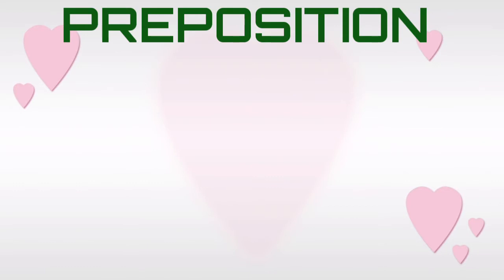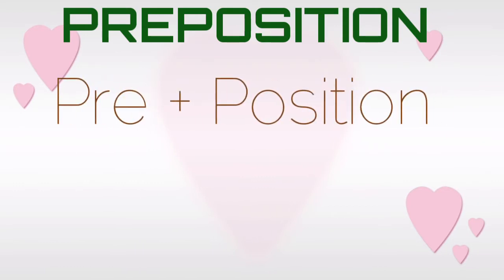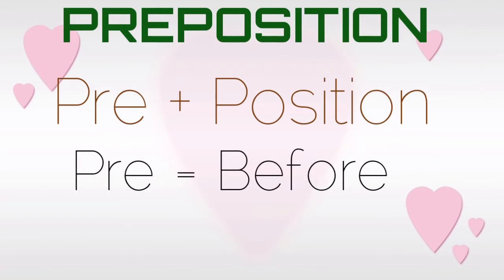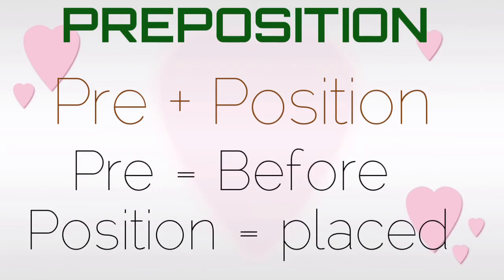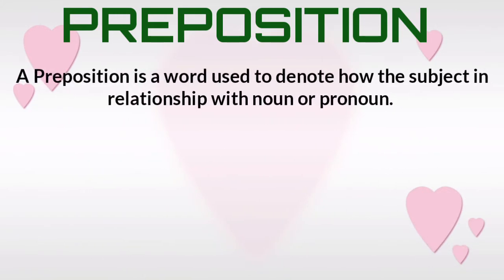The word preposition is made of 'pre' plus 'position'. Here, 'pre' means before, and 'position' means placed. Hence, a preposition is a word which is placed before a noun or a pronoun to show the relationship of that noun or pronoun with some other words in the sentence. In simple words, a preposition is a word used to denote how the subject is in relationship with a noun or pronoun.